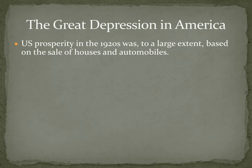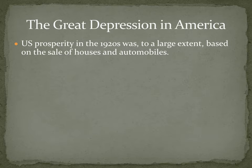U.S. prosperity in the 1920s was, to a large extent, based on the sale of houses and automobiles. If you've done your 1920s statistics assignment, you will see the increase in purchases of those things. It's the multiplier effect — everybody had jobs, so everybody bought things, which created more jobs. But it was based on houses and automobiles.